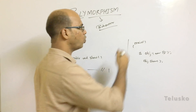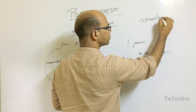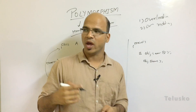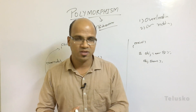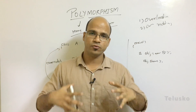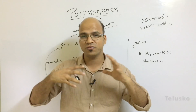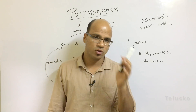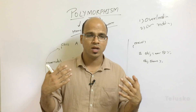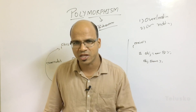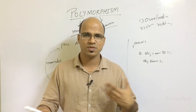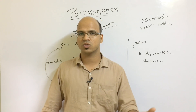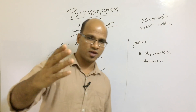So when you talk about polymorphism, we have two concepts. One is overloading, and the second one is overriding. Quick recap: when you have two methods with the same name but different parameters, that's overloading. When you have two methods with the same name and same parameters but in two different classes linked by inheritance, that's overriding. That's it from this video — all about polymorphism. If you have any questions, post them in the comment section. Every Sunday we'll have a QA session where you can ask questions live. Thanks for watching and do subscribe.